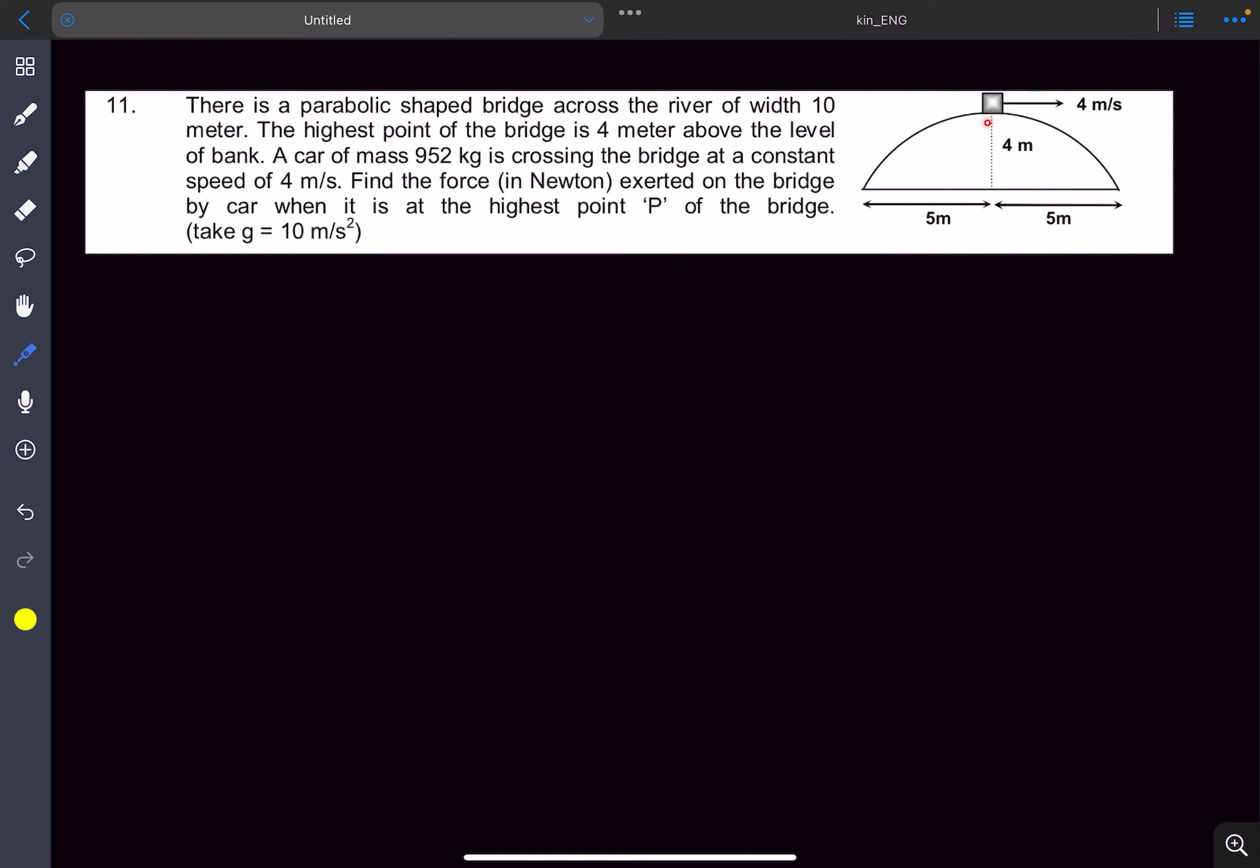The highest point of the bridge is 4 meters above the level of bank. We have a car whose mass is given and it's crossing the bridge at a constant speed of 4 meters per second. We need to find the force exerted on the bridge by the car when it is at the highest point P of the bridge.